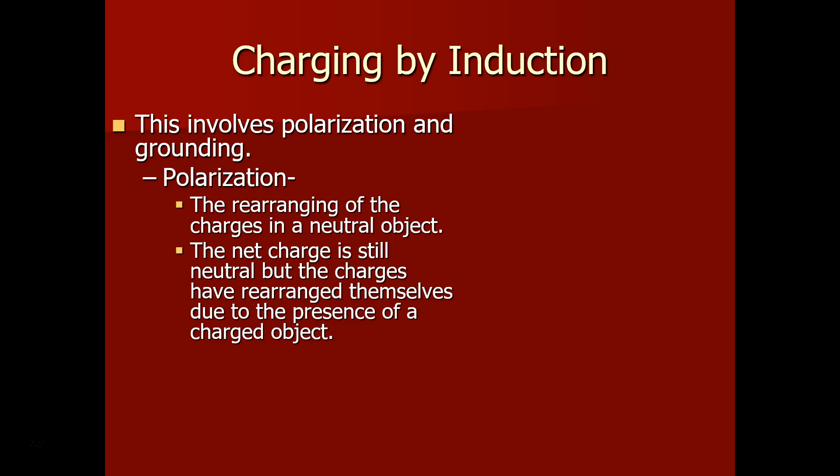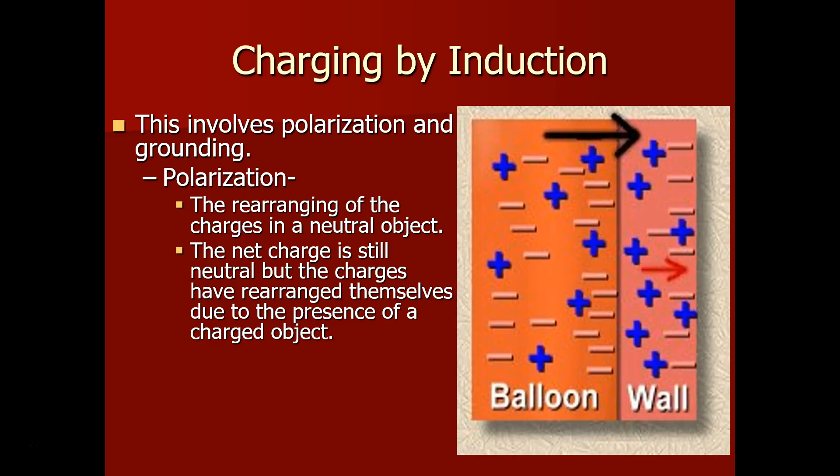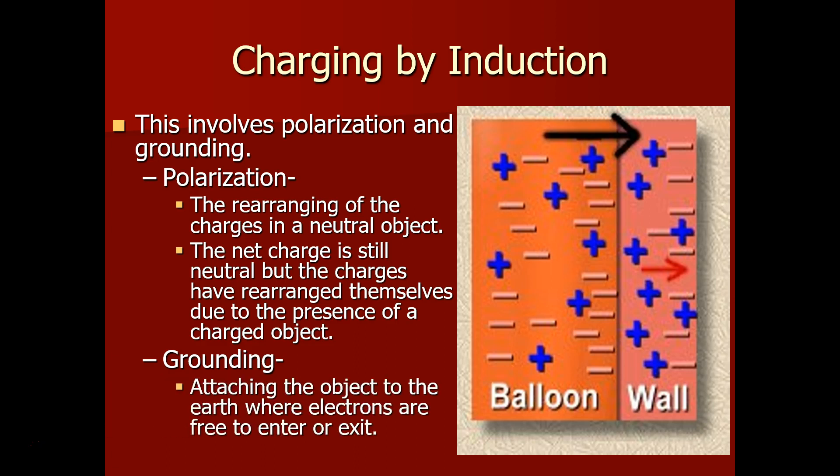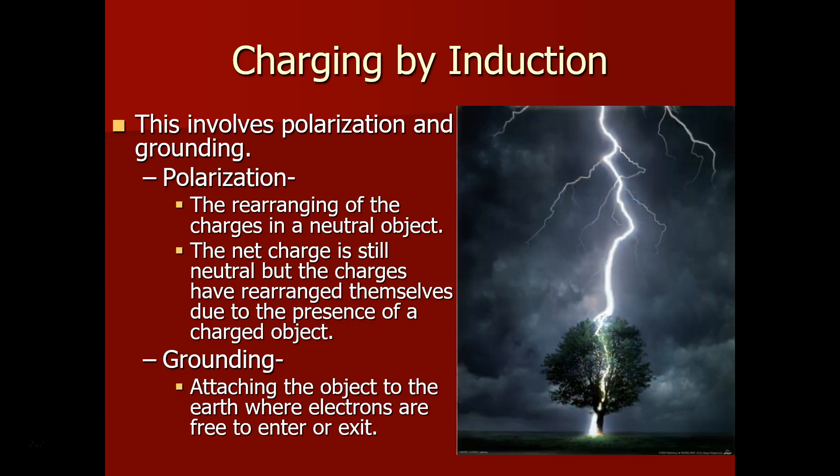This is the negative charges in your hand moving away from the negatively charged balloon. And then grounding gives those electrons a path. Now that we have them all far away from the balloon, we can ground them and attach the object to the earth, where the electrons are free to enter and exit. This is what lightning is. Lightning has a buildup of negative charges in the sky or the ground, and then there's a free exchange of electrons between the sky and ground.